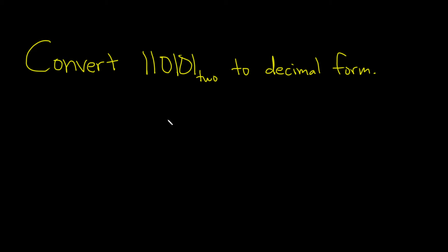Hi everyone, in this problem we're going to convert this number which is in base 2, also known as binary, to decimal form which is base 10. Basically, you just multiply each of these numbers by a power of 2.